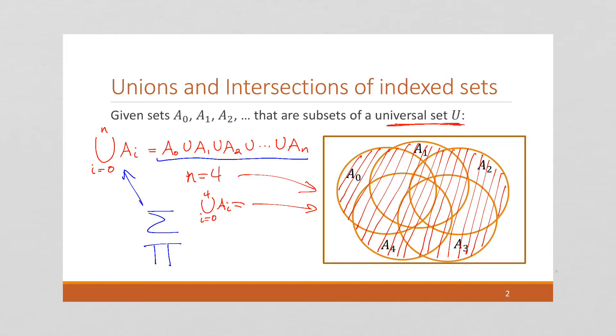And then we could say this is A_1 union with A_2, union with A_3, union with A_4.